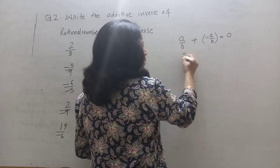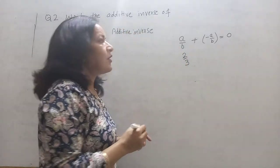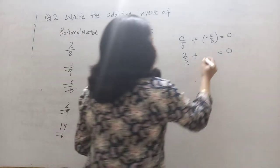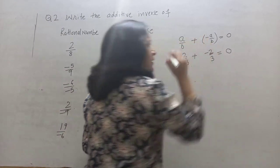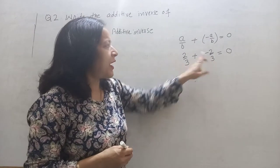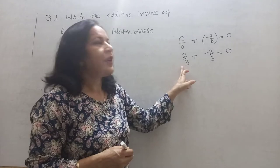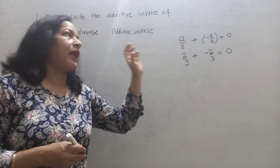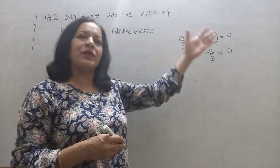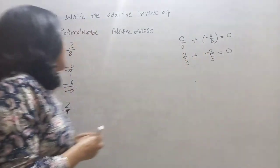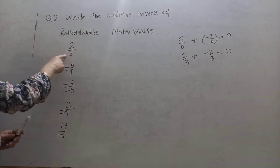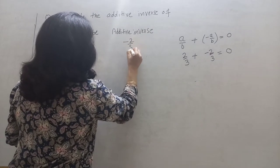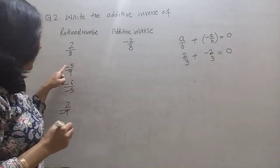For example, it's 2 upon 3. So what should I add to 2 upon 3 so that I get 0? The same number with a negative sign. So minus 2 by 3 is the additive inverse of 2 by 3.